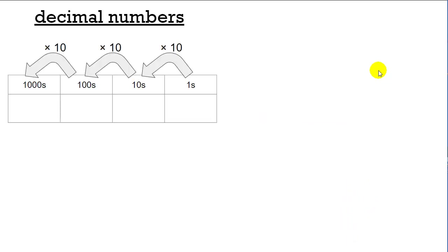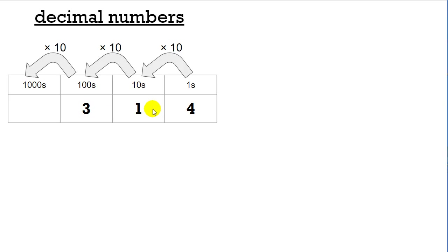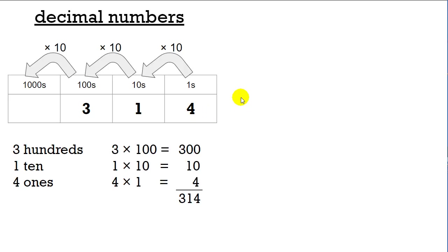Let's see how this thing works. We know how decimals work. These are the ones, these are the tens, these are the hundreds, these are the thousands. To get from ones to tens, you multiply by ten; tens to hundreds, multiply by ten; hundreds to thousands, multiply by ten. Decimal numbers: three hundreds, one ten, four ones — we say three hundred fourteen. That's how decimals work.